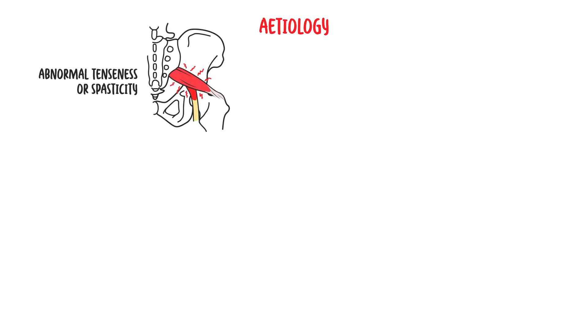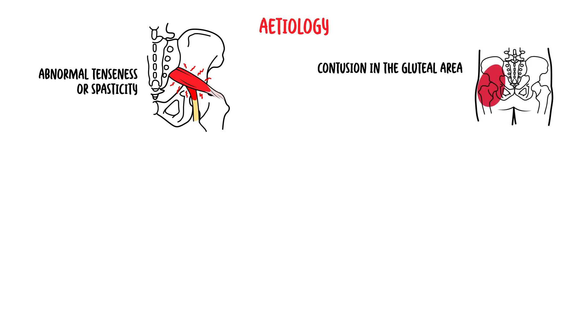The causes of piriformis syndrome are a number. For example, abnormal tenseness or spasticity of the piriformis muscle can be caused by trauma or overuse injuries. Post-traumatic piriformis syndrome may be secondary to a contusion to the gluteal area, which normally occurs in middle-aged recreational athletes playing tennis, running, or cross-country skiing, for example.